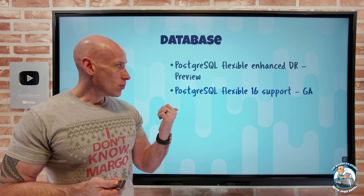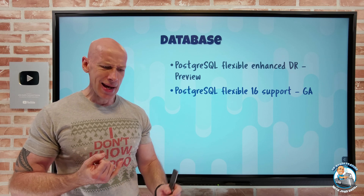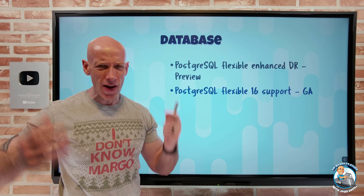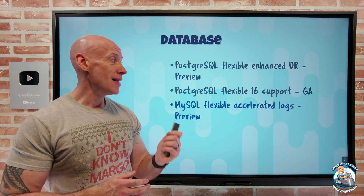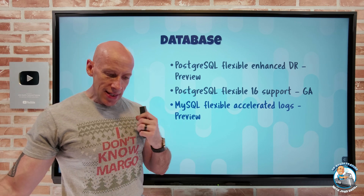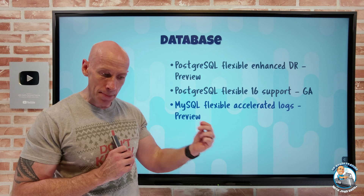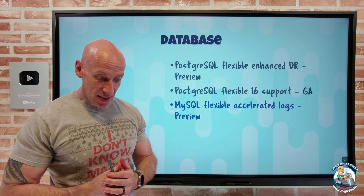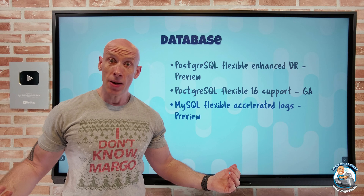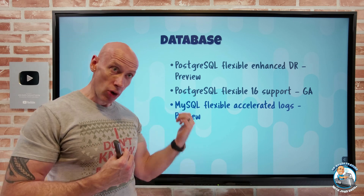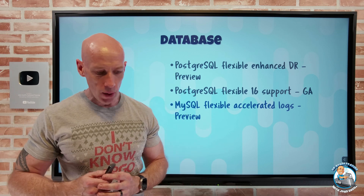PostgreSQL Flexible now has PostgreSQL 16 support in GA, bringing better logical replication, faster bulk data loading, and a range of other improvements. MySQL Flexible now has accelerated log support, which boosts server performance by moving logs for the business critical service tier to faster storage. This results in approximately a two times query improvement and a 50% reduction in latency. It doesn't cost anything extra — it's a preview feature you can turn on to move logs to lower-latency storage and improve overall performance.